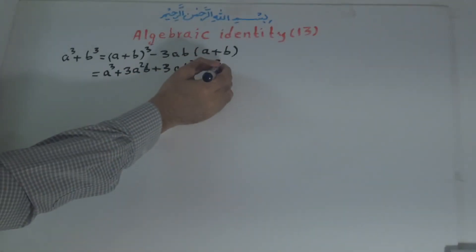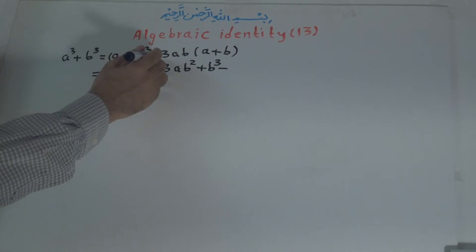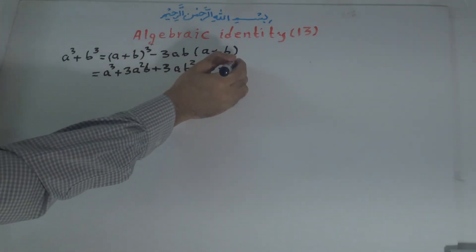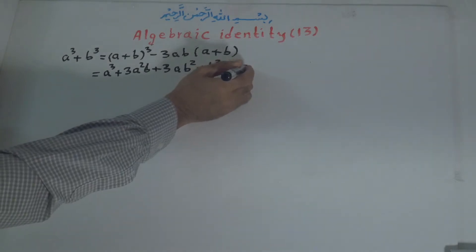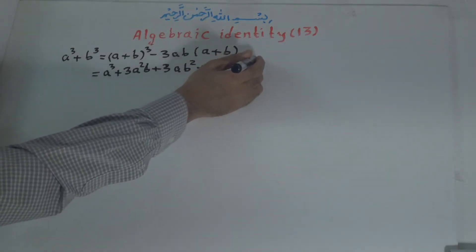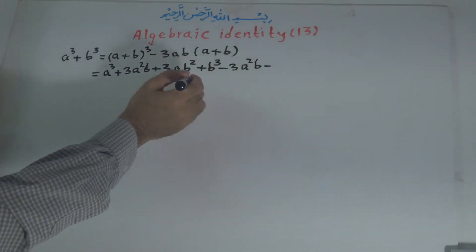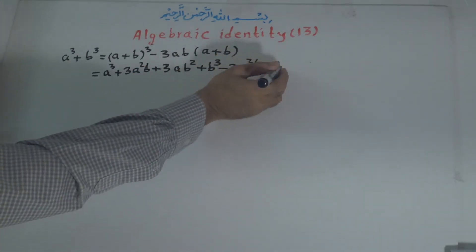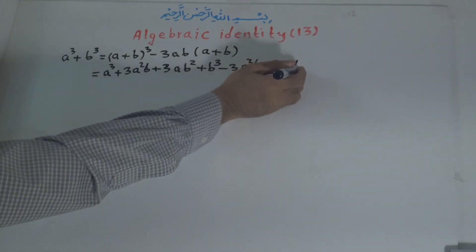And we multiply minus 3ab with the parenthesis. Negative times positive is negative: 3ab times a is 3a squared b, or 3a to the power of 2 times b. And positive times negative is negative: 3ab times b is 3ab squared.